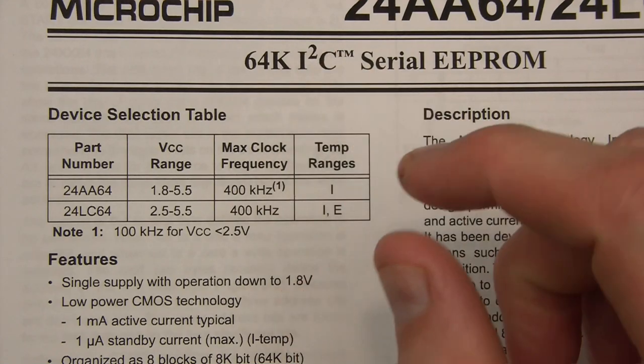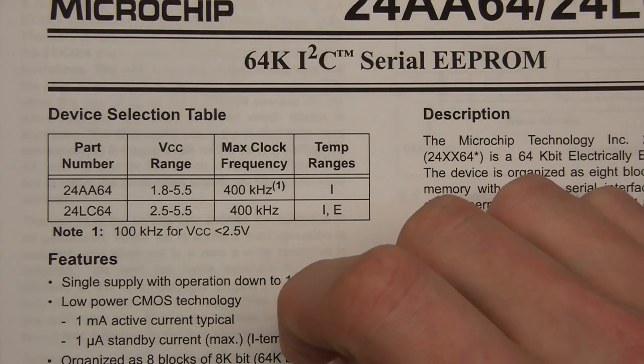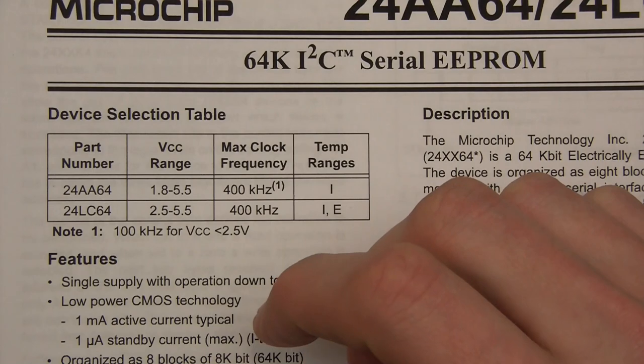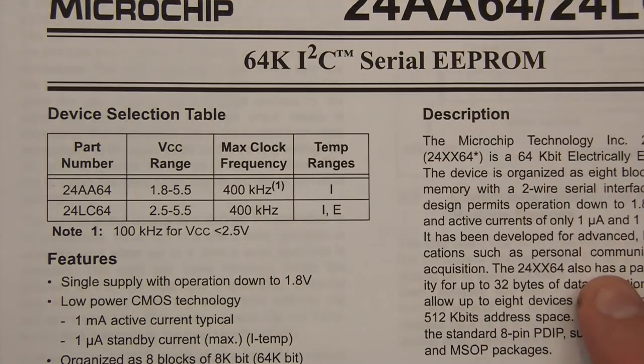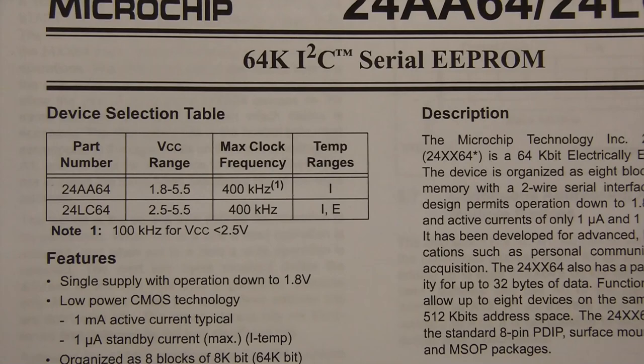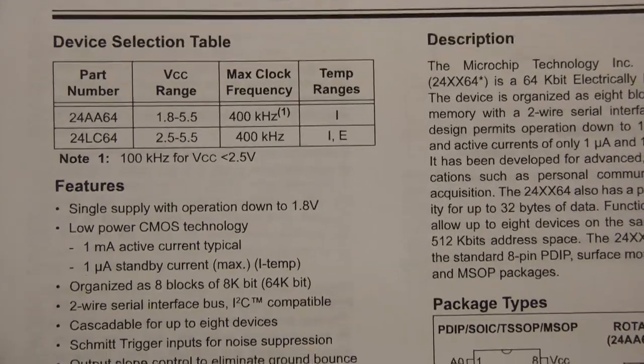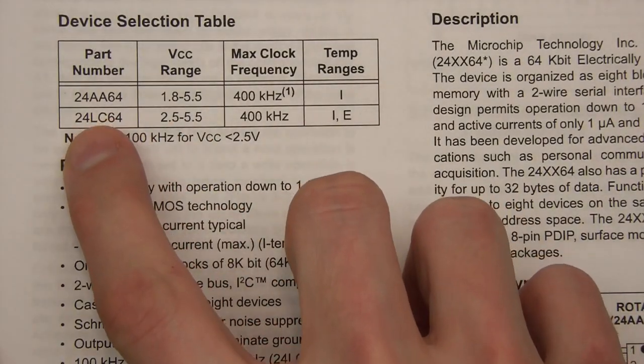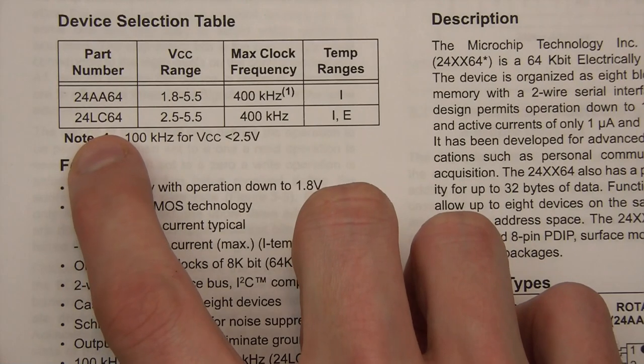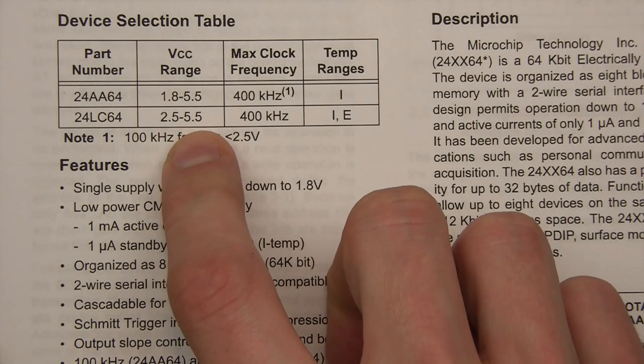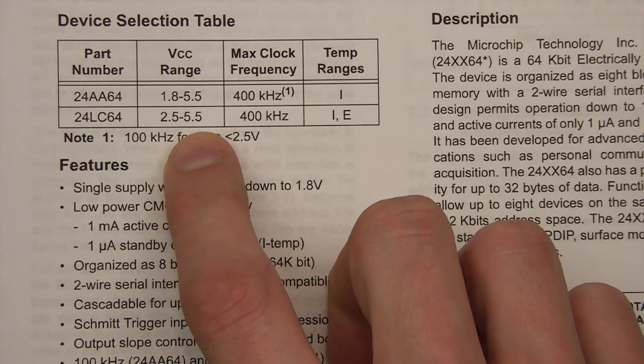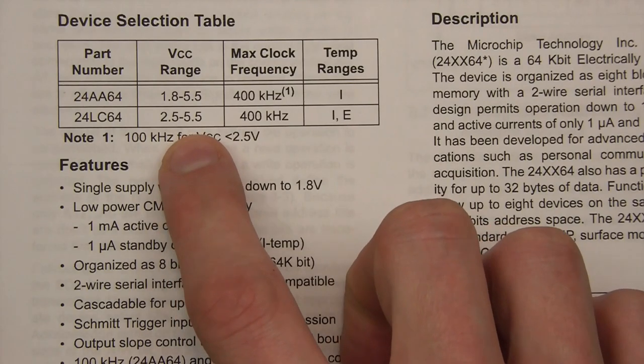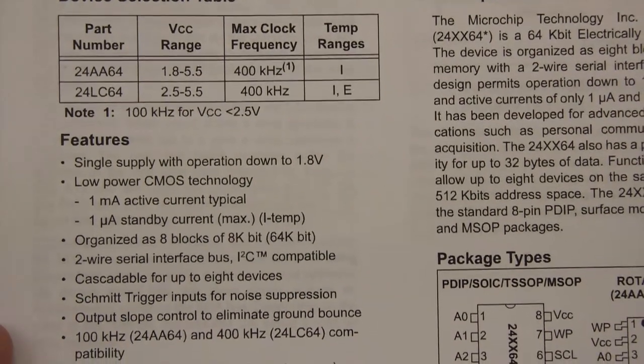It uses the I2C protocol, and if you remember rightly, that's the 2-pin protocol with SCL and SDA, serial clock and serial data. So right, what else can we get from this? Part number 24LC64, which is the one I've got. Its VCC range is 5 volts, basically, well actually 3.3 or 5 volts.